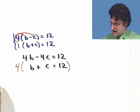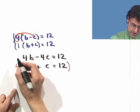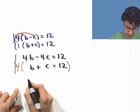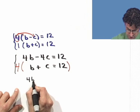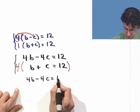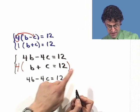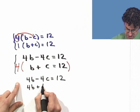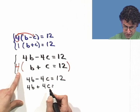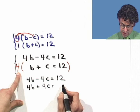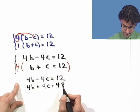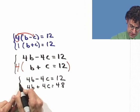So let's take a look at what we get now. Our new system, which was originally this, now it's this, is going to become the following. 4b minus 4c equals 12. And now when I multiply the second equation through by 4, I'm going to get 4b plus 4c equals 4 times 12, which is going to be 48.